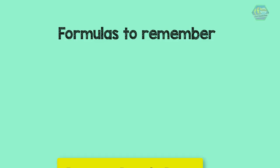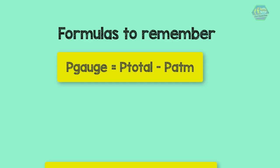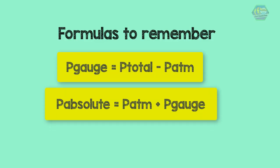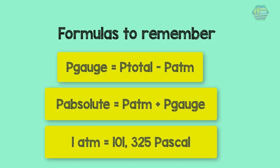Always remember these formulas, and don't forget that 1 atm is equal to 101,325 pascals.